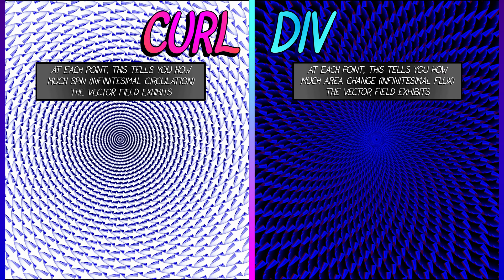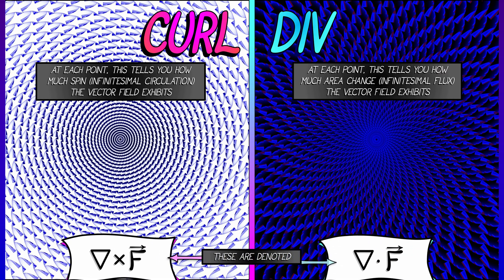The sign of each of these tells you which way things are going: counterclockwise, clockwise, out, in. The notation is also a little bit different. The curl is denoted del cross F, and the divergence is denoted del dot F for reasons yet to be explained. Let's just roll with that notation for now and think about an example.